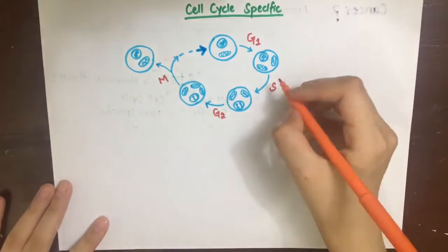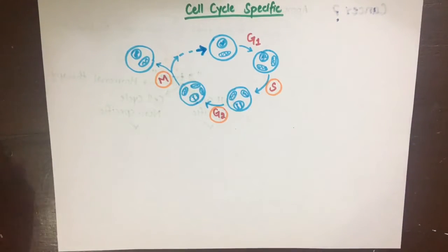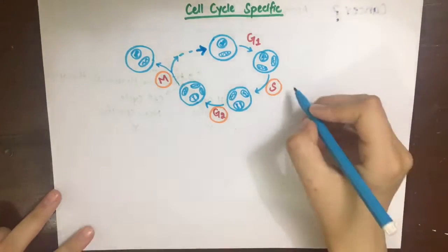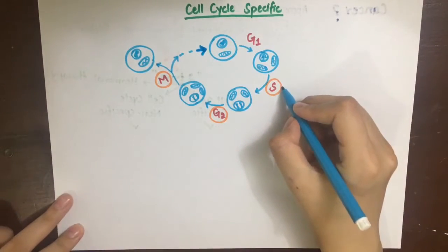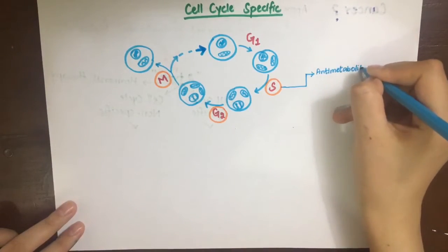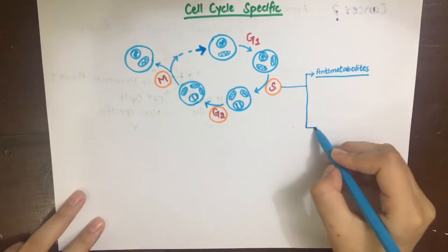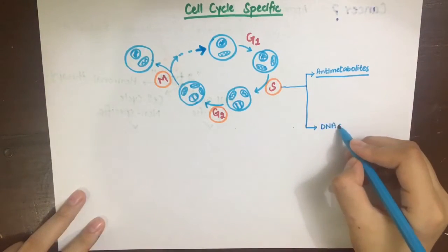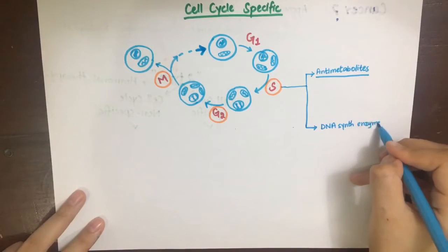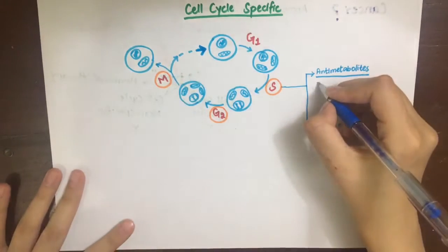Cell cycle specific anti-cancer drugs mainly act on the S phase, G2 phase, and M phase. Drugs acting on the S phase while DNA is being synthesized include anti-metabolites and DNA synthesis enzyme inhibitors. Anti-metabolites act as substrates for DNA synthesis enzymes, competing with natural substrates used in DNA synthesis such as purines and pyrimidines.